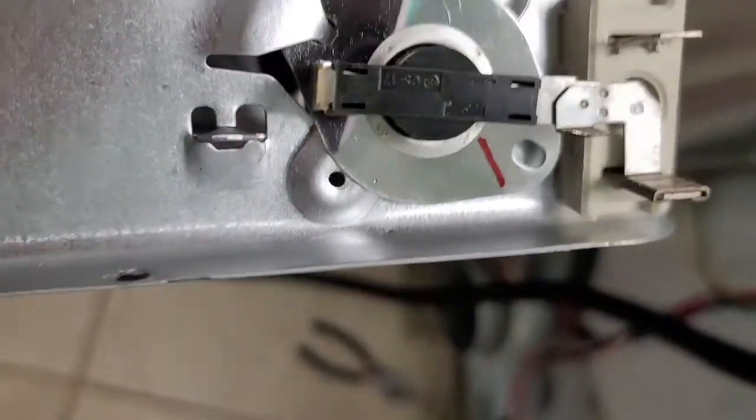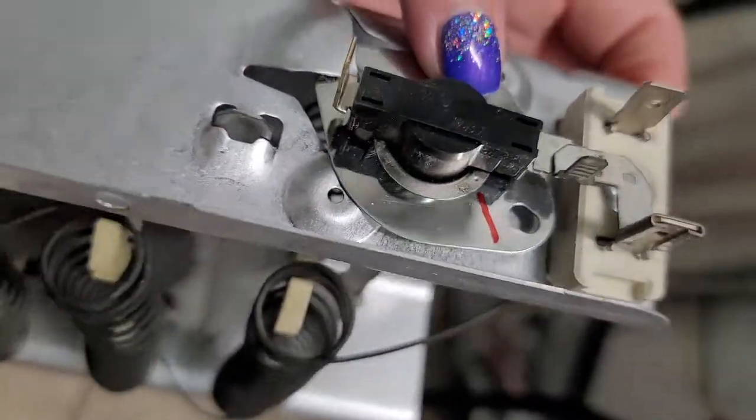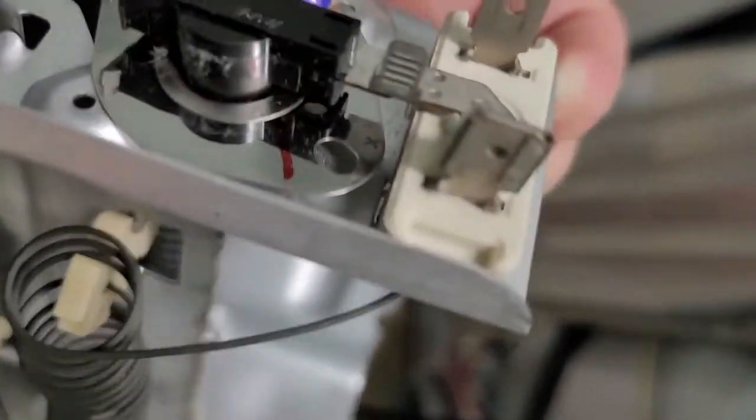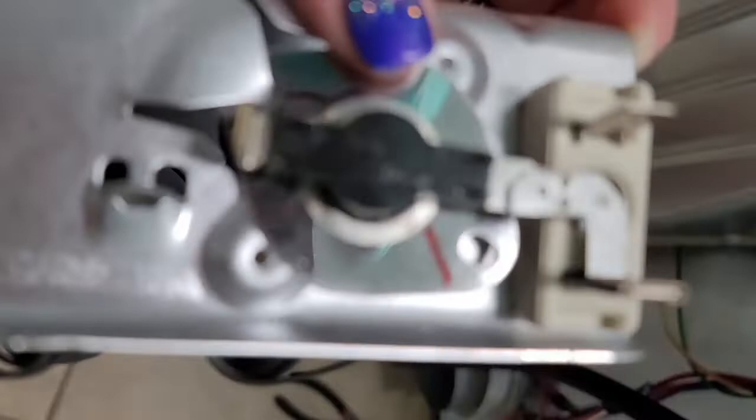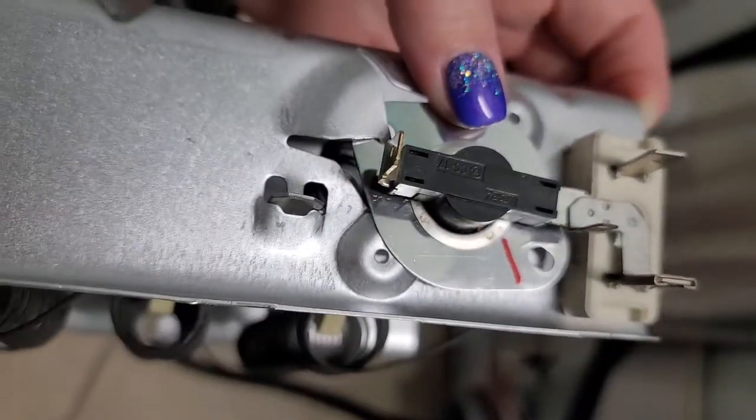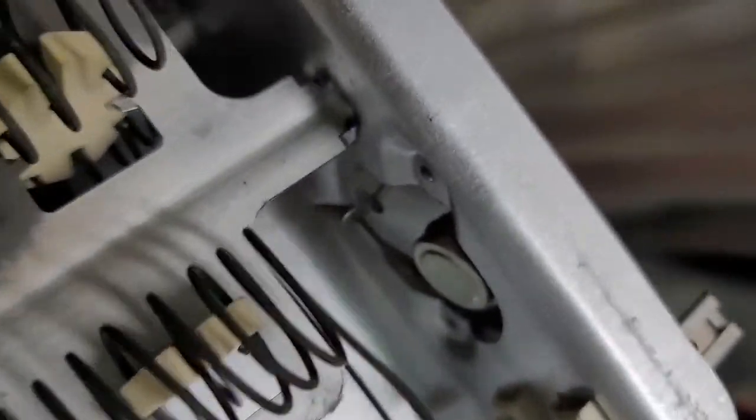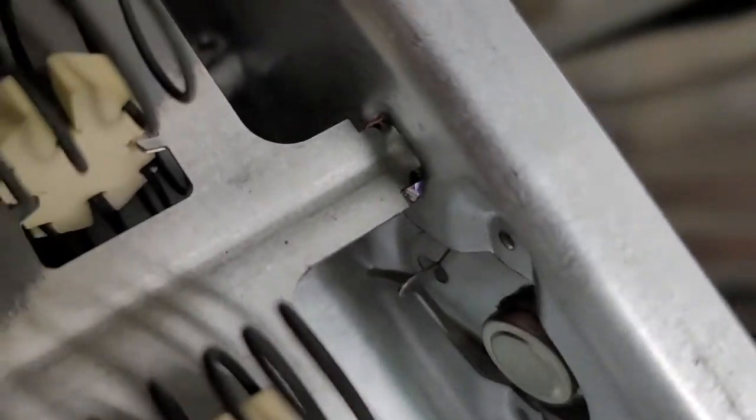So this is a high limit thermostat thingamabob. And I need to remove this, looks like it's anchored on there, and put it on the new one. So let's try that out. This thing is held on here with this little clip. So I bent that clip in right there.